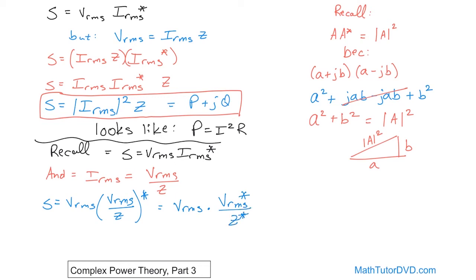So we'll have V_RMS times, and then over here we'll have V_RMS conjugate over Z conjugate. It turns out that whenever you have complex numbers like this and you're dividing them, the conjugation goes and applies to the top, it also applies to the bottom. So that's why we have two asterisks there now, but I dropped the parentheses. But notice what we have. We have V_RMS times V_RMS conjugate. And we just said that when you have a complex number times its conjugate, you get the magnitude squared of that guy.